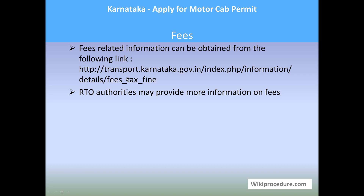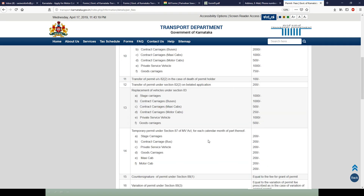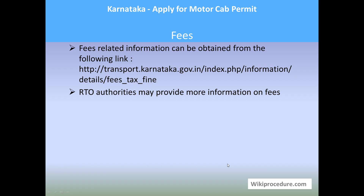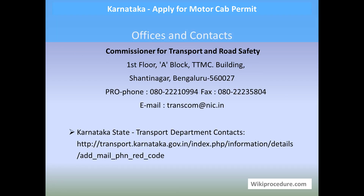A link is provided which will give access to fee-related details for each service. Please note the service and the amount you want to pay as fees, so you are better informed about the amount you need to pay. Processing time: it takes five working days to get the permit.